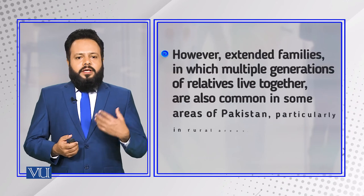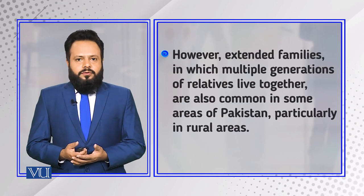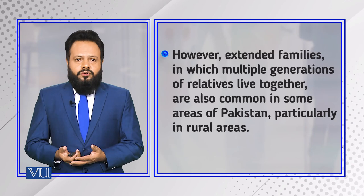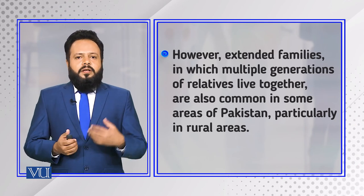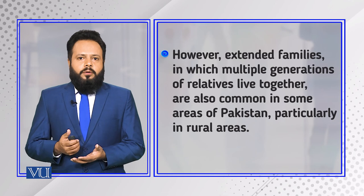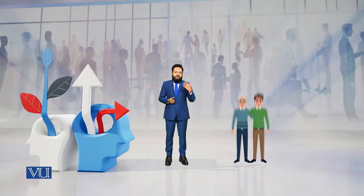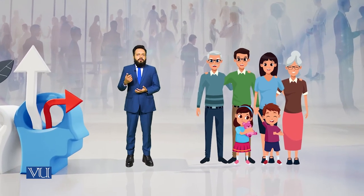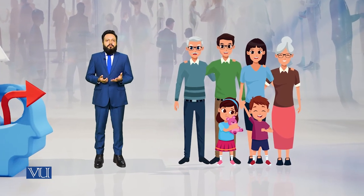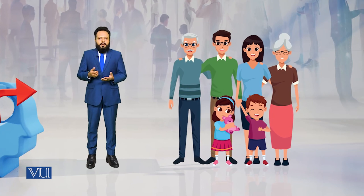Then we have the extended family patterns, in which multiple generations of relatives live together. This is also common in rural areas of Pakistan. However, in Western societies or in developed countries, these family patterns are rarely observed. When we talk about these family patterns, it doesn't mean that we only talk about structure — we also talk about the decision-making patterns and the authority patterns.